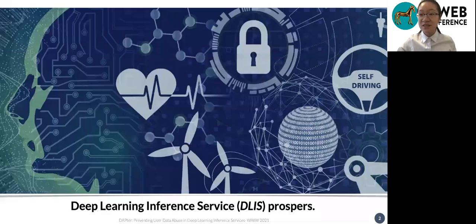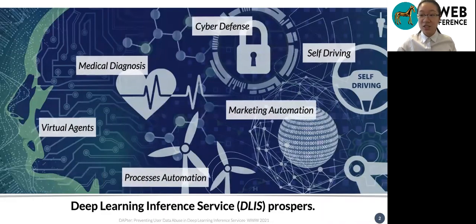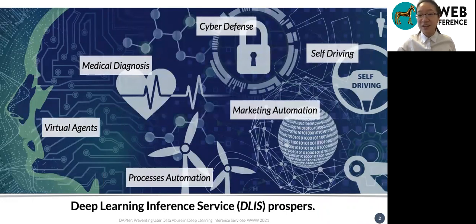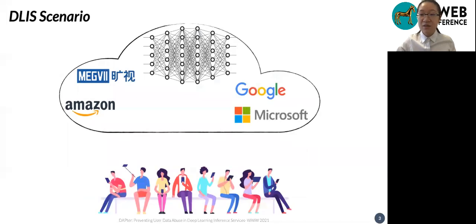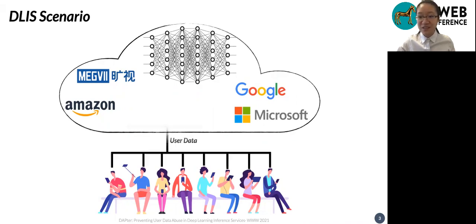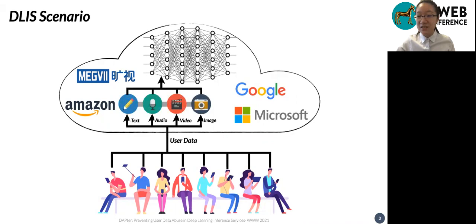Deep learning inference services have lately gained a lot of popularity among mobile end users. They have achieved great success in many fields such as medical diagnosis, virtual agents, process automation, cyber defense, self-driving, and marketing automation. Deep learning inference services deliver AI's power to resource-limited devices by offloading expensive computations to the cloud. Leading web service providers such as Microsoft, Google, Amazon, and Face++ have achieved great business successes with deep learning inference services launched for their customers. A user submits their data via a mobile app to the corresponding cloud backend and receives the inference results back in real time.